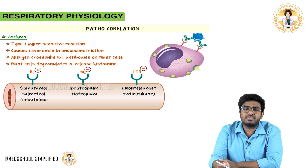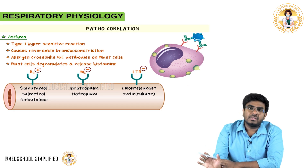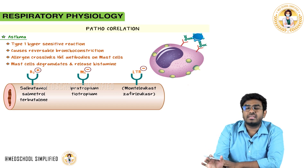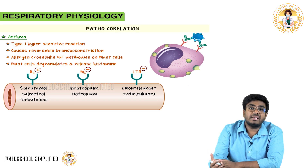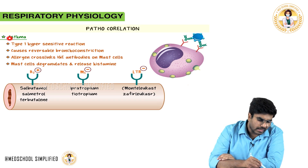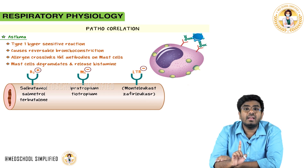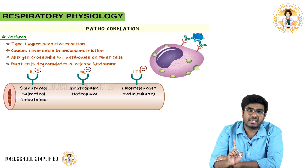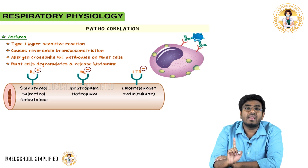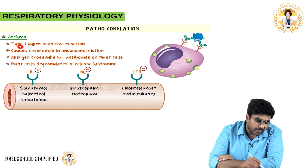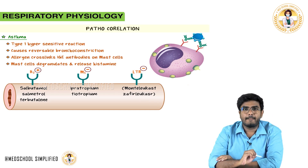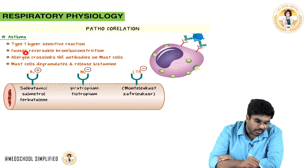Understanding this pathophysiology makes it easier to understand asthma treatment. Asthma is a type-1 hypersensitivity — all allergic reactions are anaphylactic or type-1 hypersensitivity reactions — and the core problem is reversible bronchoconstriction.